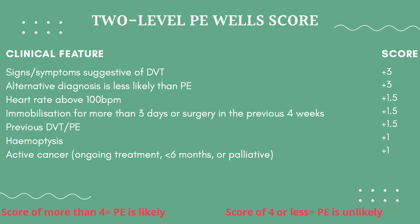Moving on to the patient's management — we have a 2-level PE Wells score, similar to the DVT Wells score with some changes. Clinical features assessed include: signs and symptoms suggestive of DVT (score 3), alternative diagnosis less likely than PE (score 3), heart rate above 100 beats per minute, immobilization for more than three days or surgery in the previous four weeks, previous DVT or PE, hemoptysis, and active cancer ongoing, in the past six months, or palliative. A score of more than 4 points towards PE being likely; a score of 4 or less means PE is less likely.